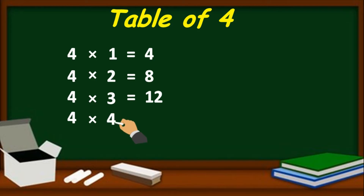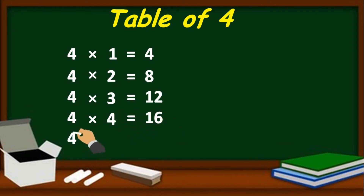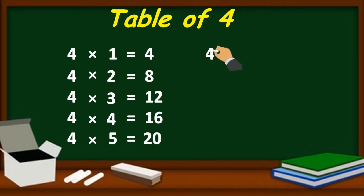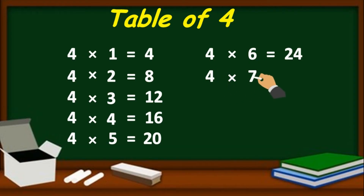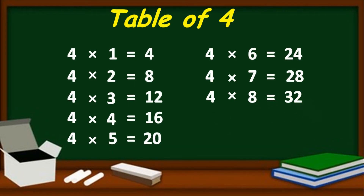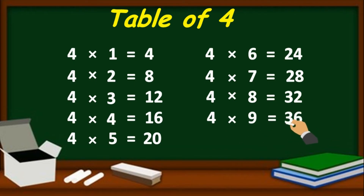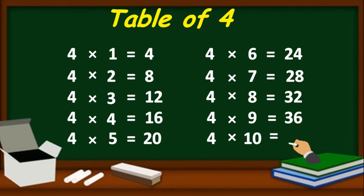Table of 4. 4 five's are 20, 4 six's are 24, 4 seven's are 28, 4 eight's are 32, 4 nine's are 36, 4 ten's are 40.